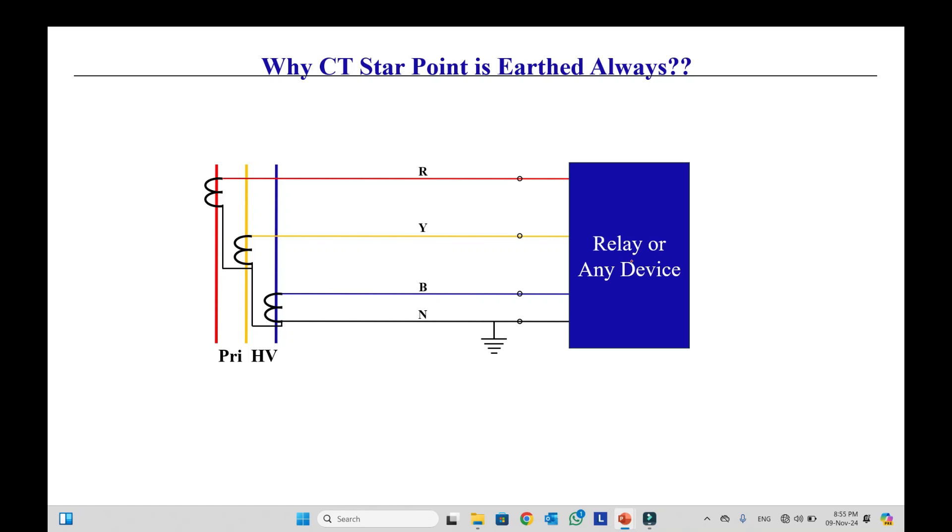It could be a relay or any other device such as a meter. So we have this concerned point of neutral. Actually this is our star point and it is earthed. We can see earth is connected. We have the high voltage or extra high voltage or medium voltage primary side of the CT, and the secondary side is low voltage.